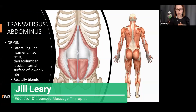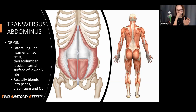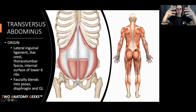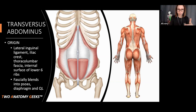Rectus abdominus is superficial — right there on the front of the abdominal area. Then we go down a couple layers into the deep layer of your abdominals called your transverse abdominus. We have some pictures to give you an idea of how far around the torso it actually goes. We're going to start from the back, at the thoracolumbar fascia — at the posterior aspect.